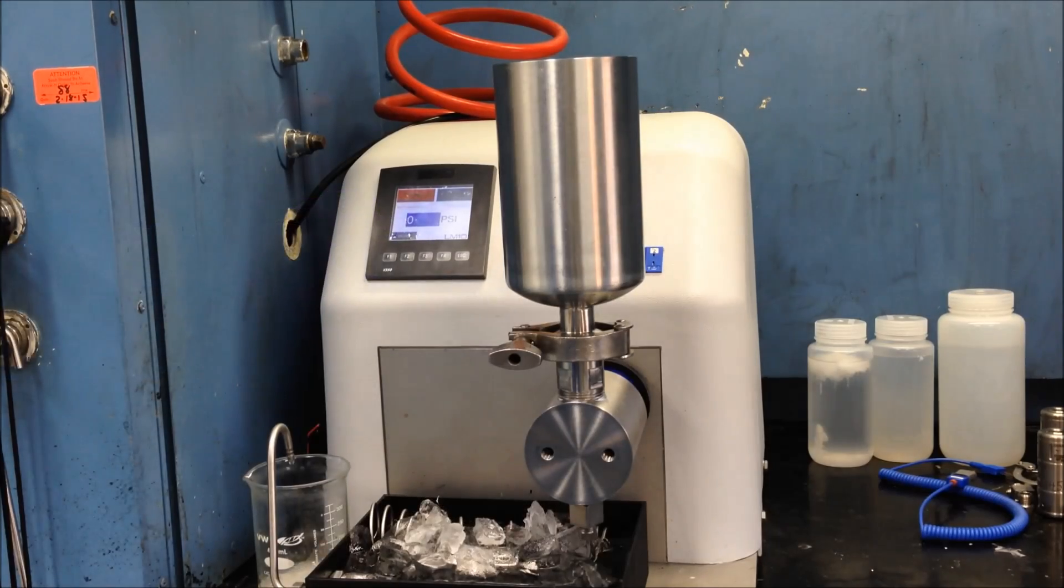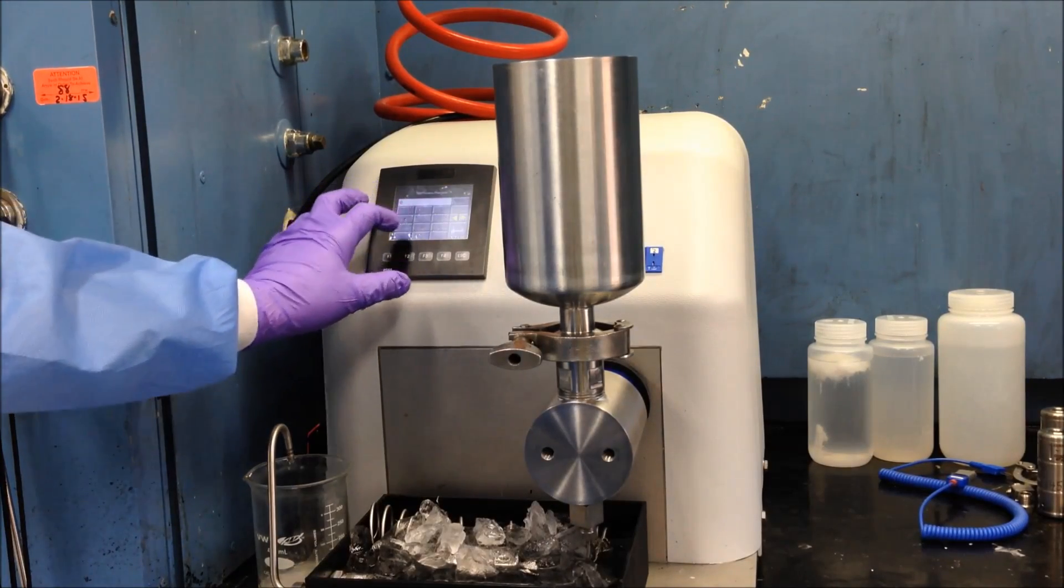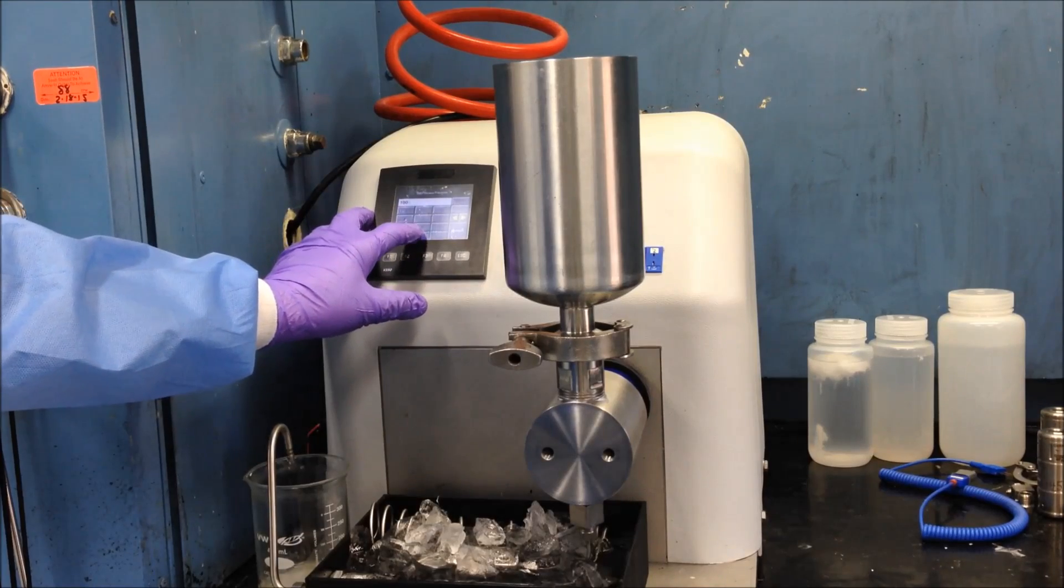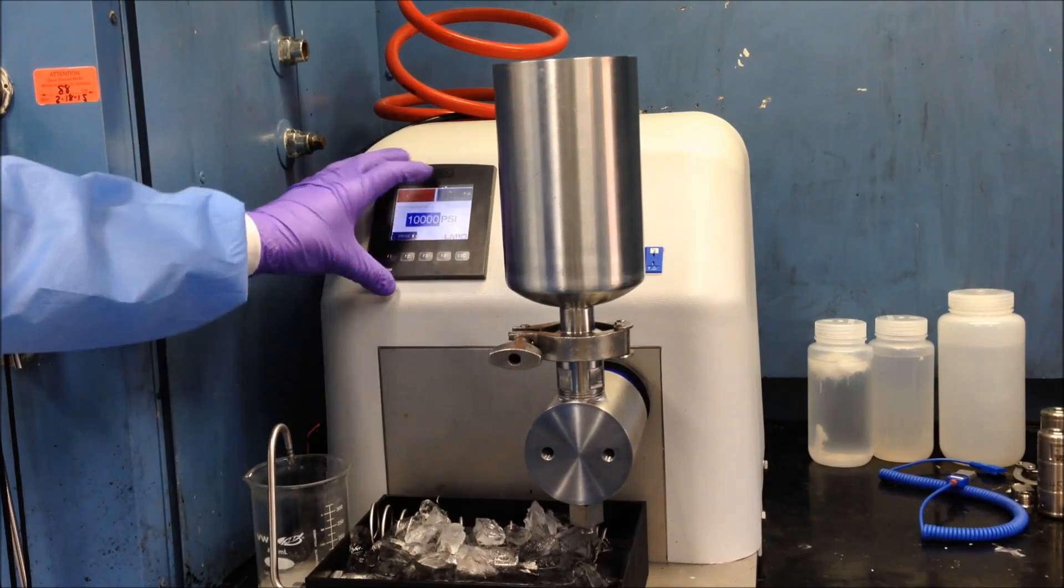After priming the machine, we can input our processing pressure. In this case, our processing pressure will be 10,000 PSI.